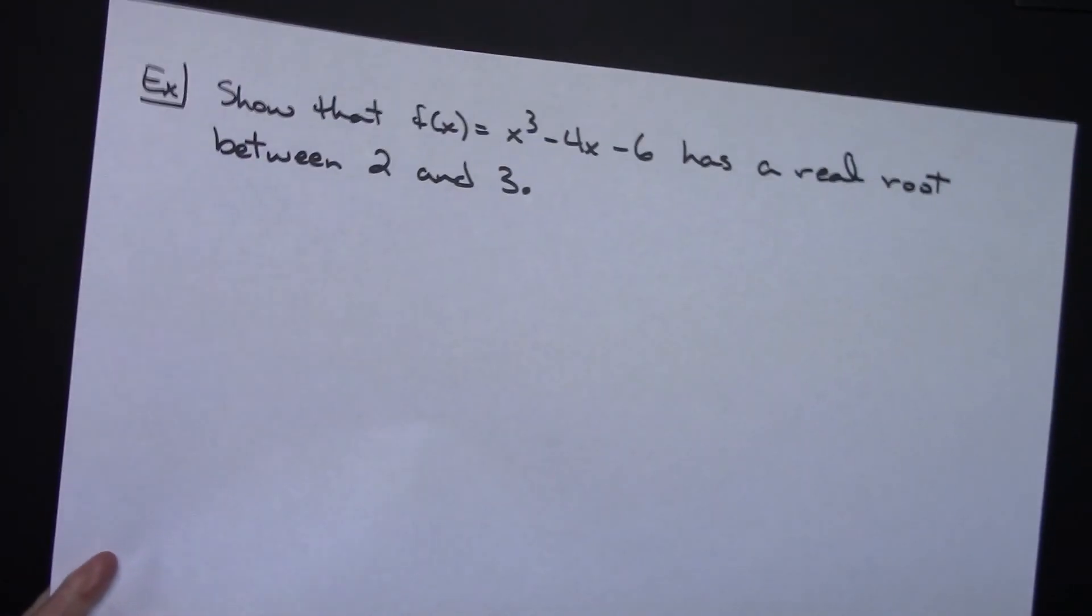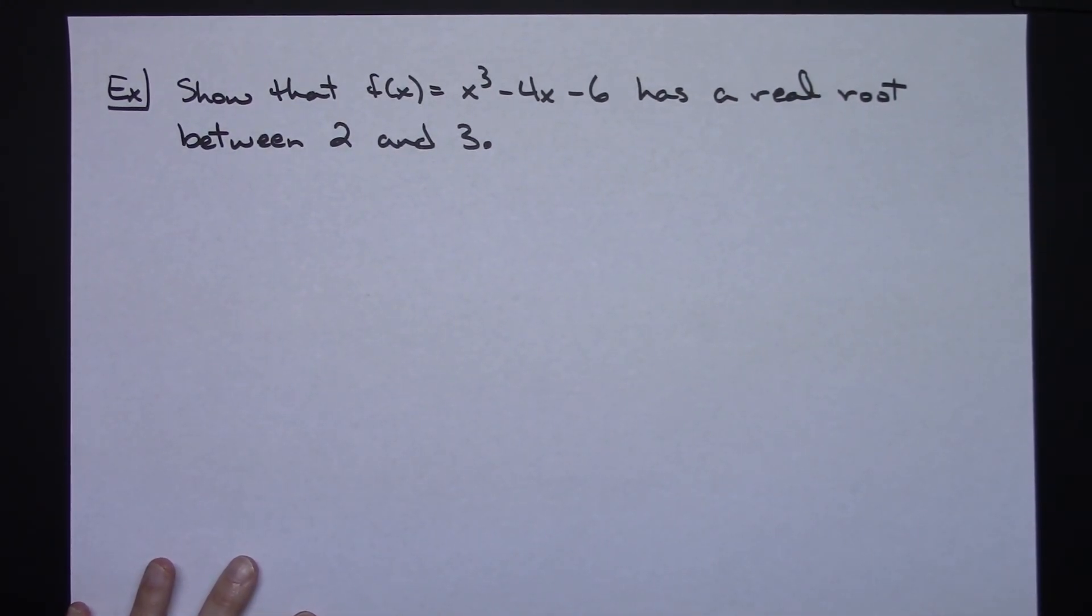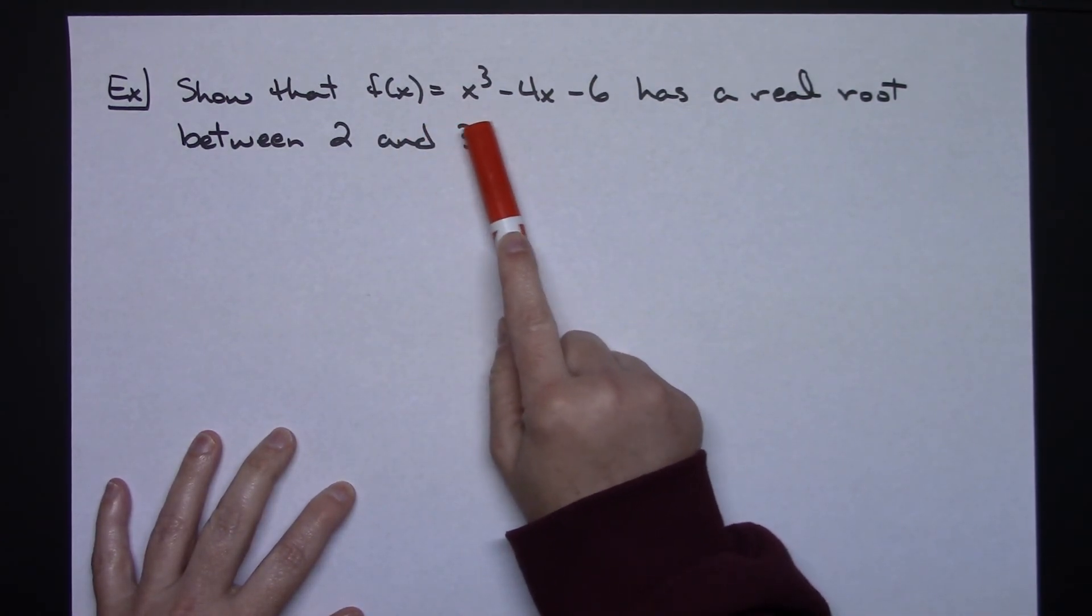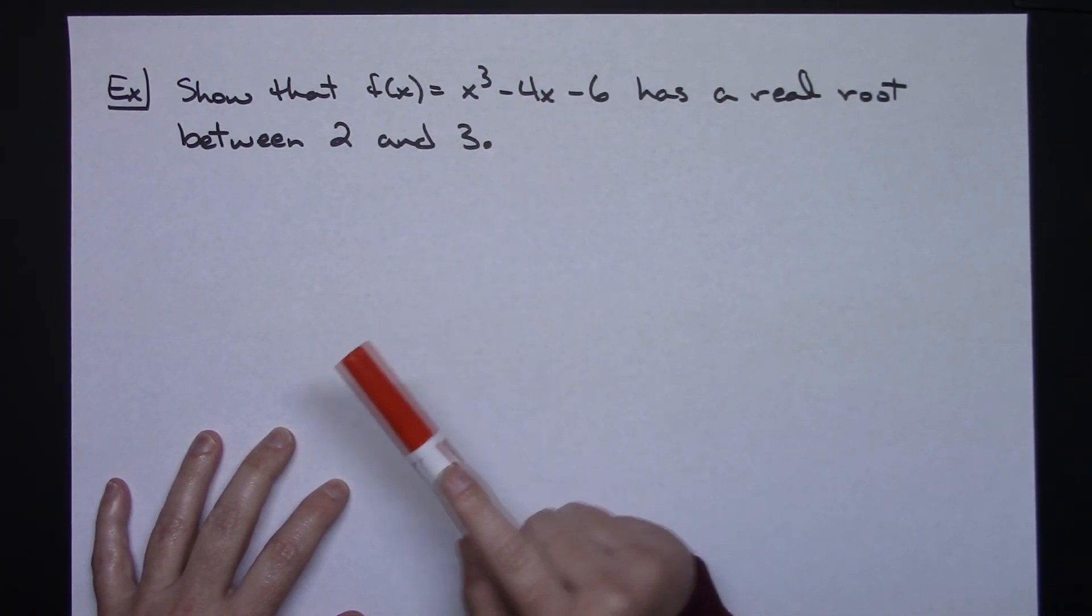So that's kind of an analysis of that intermediate value theorem, a really simple concept. Now let's take a look at an example of how that might be applied.